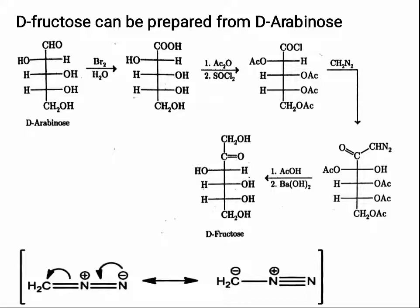In the Wohl-Zemplen method, fructose can be prepared from D-arabinose. Start with arabinose, then add bromine water — the aldehyde group will be oxidized into a carboxylic acid. Then add thionyl chloride (SOCl₂) to convert the carboxylic acid into an acid chloride.